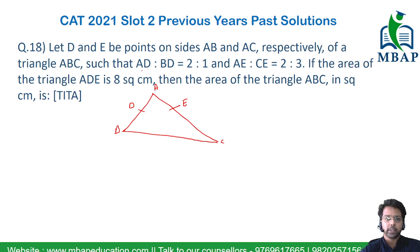The first ratio is AD is to BD is 2 is to 1. So let's assume this to be as 2x and let's assume this to be as x. And now AE versus CE is 2 is to 3. So let's assume this to be as 2y and this to be as 3y.